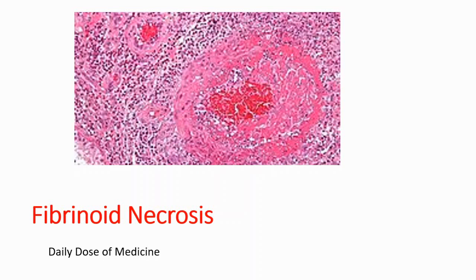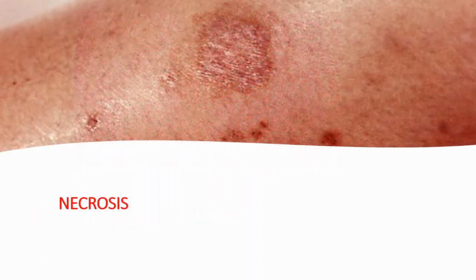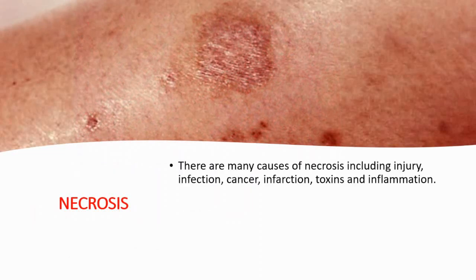Let's talk about fibrinoid necrosis. Fibrinoid means fibrous tissue and necrosis means death of body tissue. Necrosis can be caused by injury, infection, cancer, infarction, toxins, and inflammation.